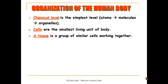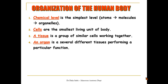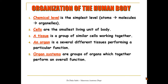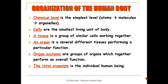When similar cells group and work together, we have what's called tissue. When different tissues group together and perform a particular function, we call it an organ. When different organs group together, they form a system, and the total organism — the human body — is made of different organ systems.